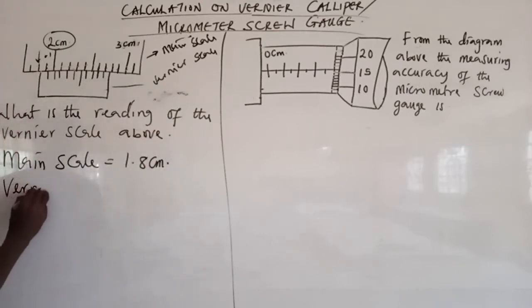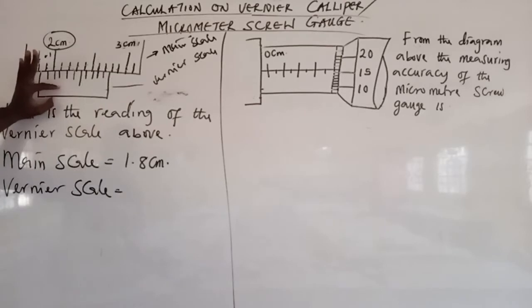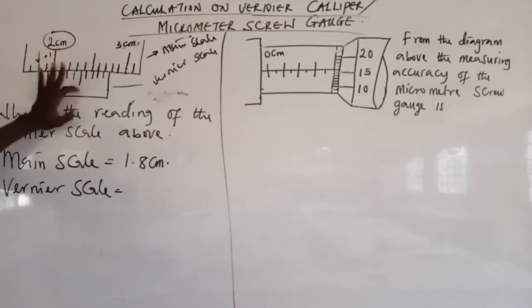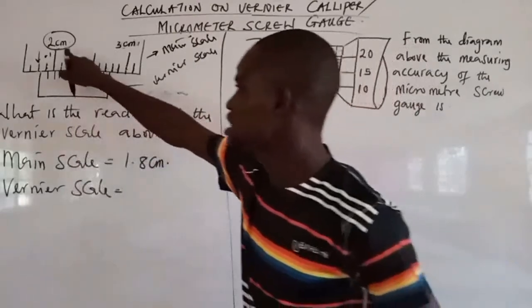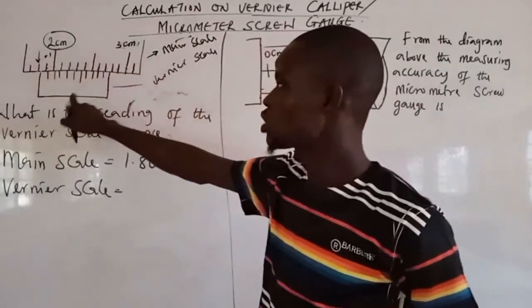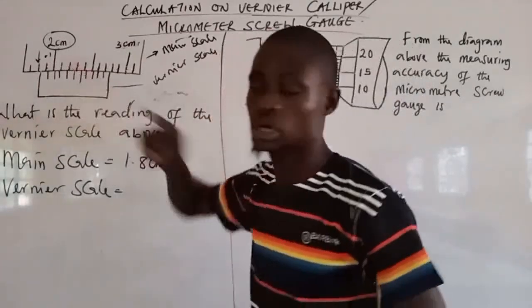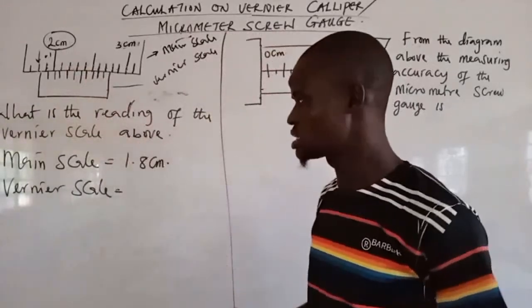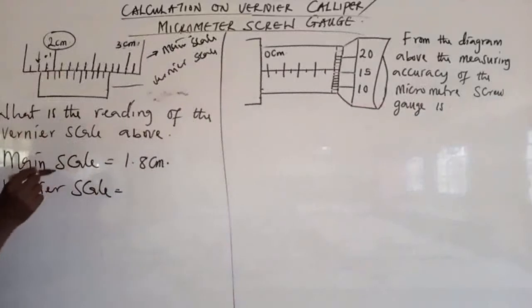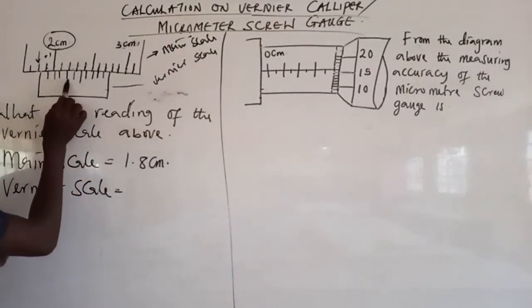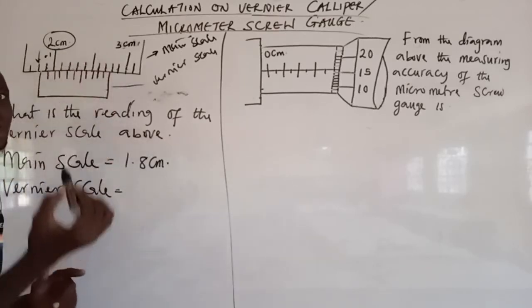The next step is to find our vernier scale reading. Our vernier scale reading is always found from the vernier scale itself. Don't forget — the accuracy of the vernier caliper's vernier scale is 0.01 cm. To find the reading, you look for the position where one of the small lines on the vernier scale coincides directly with a line on the main scale, as if it is drawn from the main scale.